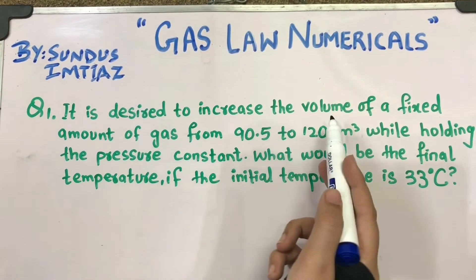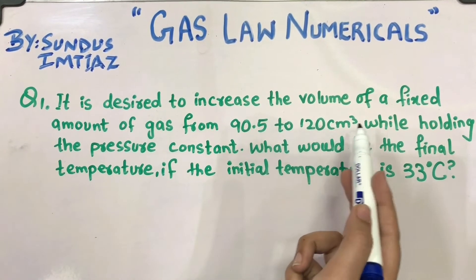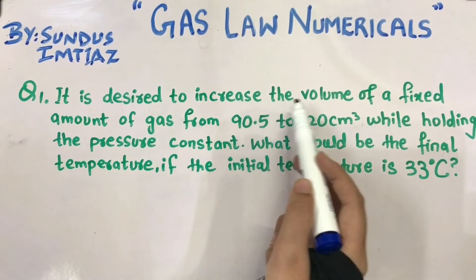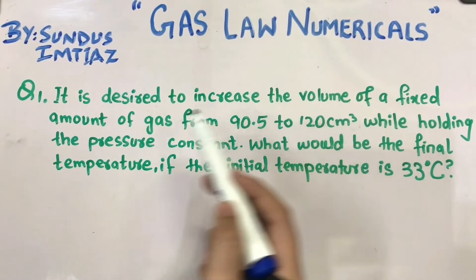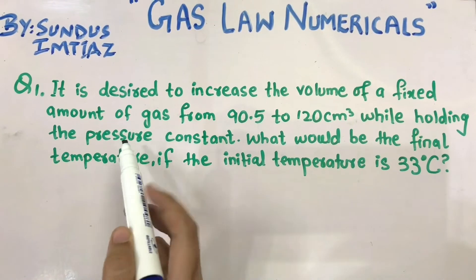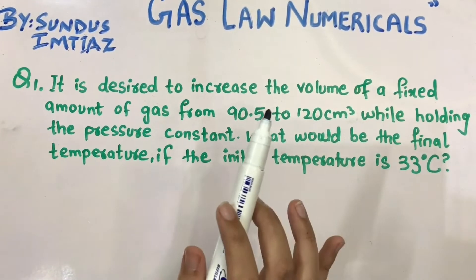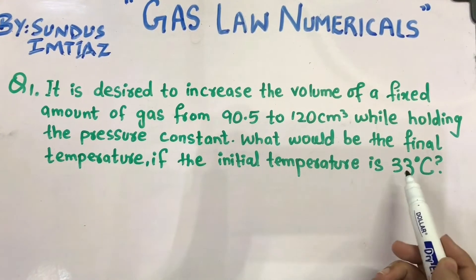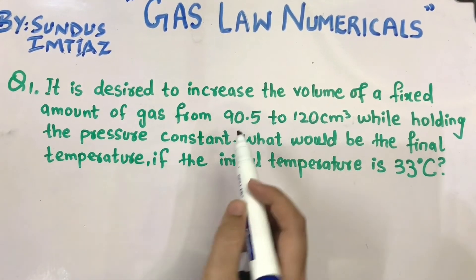It is desired to increase the volume of a fixed amount of gas from 90.5 to 120 centimeter cube while holding the pressure constant. According to Charles's Law, pressure is constant. What would be the final temperature if the initial temperature is 33°C?